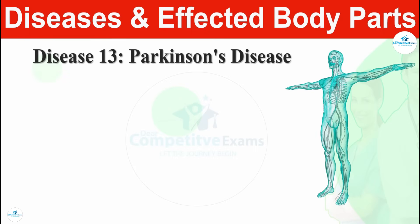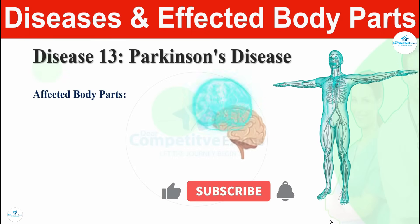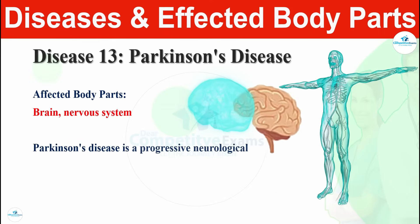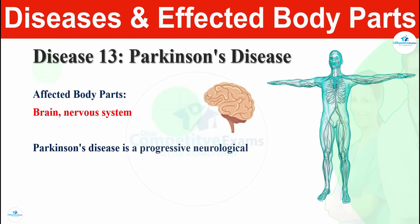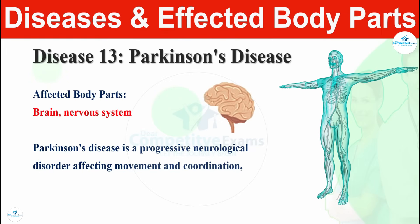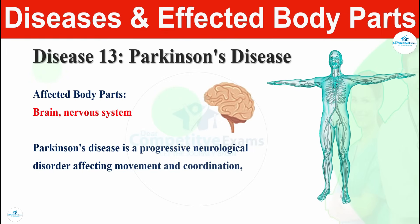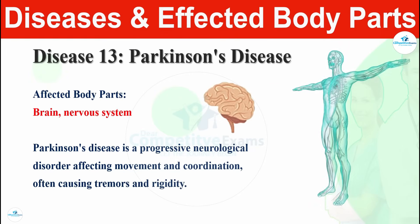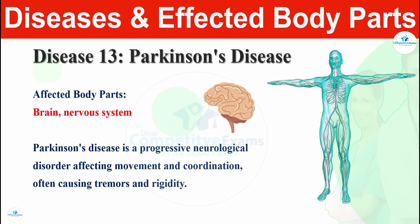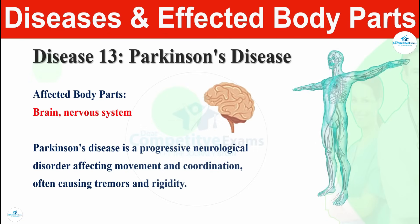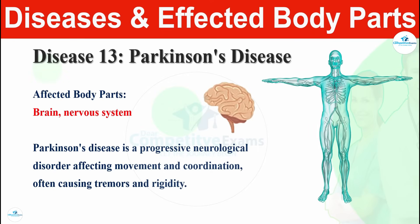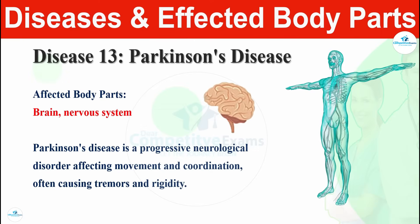Disease number thirteen is Parkinson's disease. Parkinson's disease affects the brain and nervous system. It is a progressive neurological disorder affecting movement and coordination, often causing tremors and rigidity. This disease affects the brain and nervous system, impairing movements and coordination.